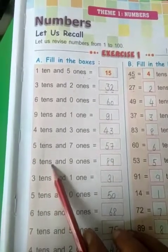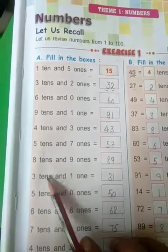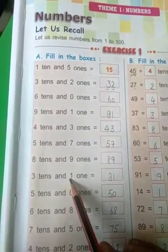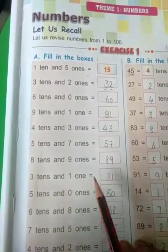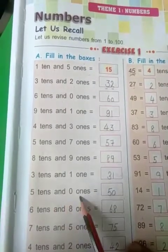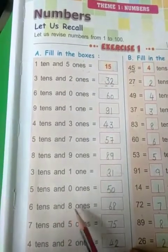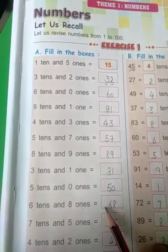8 tens and 9 ones is 89. 3 tens and 1 one is 31. 5 tens and 0 ones is 50. 6 tens and 8 ones is 68.